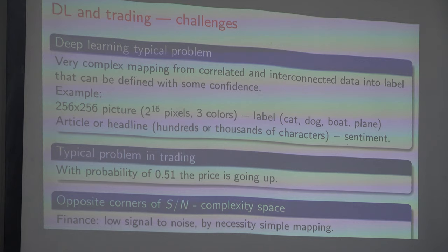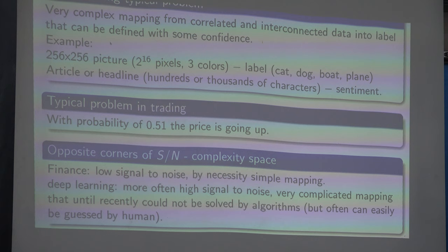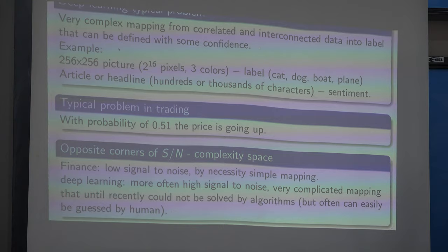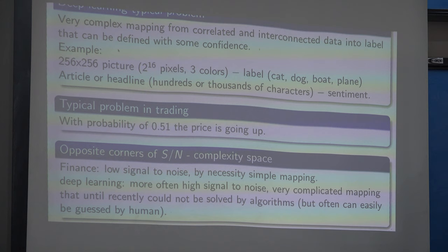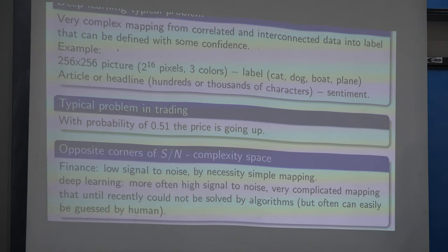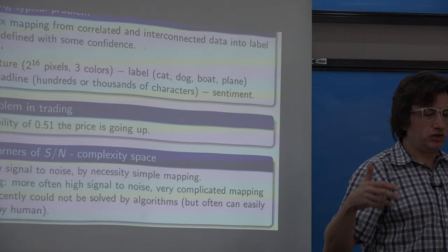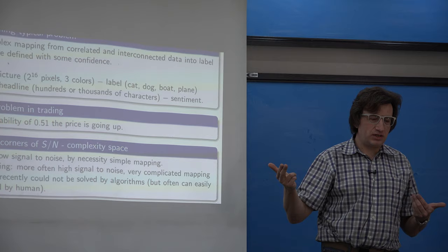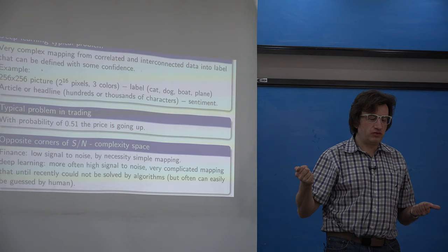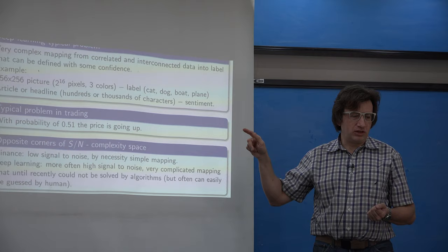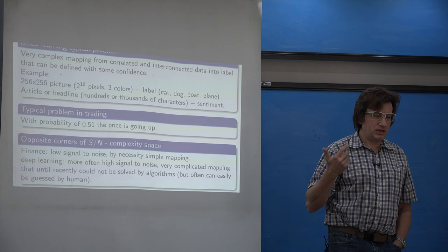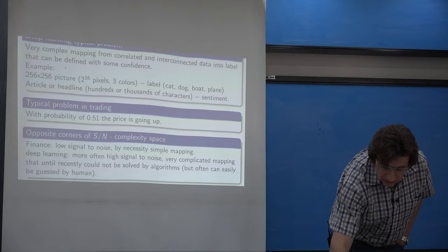Why is this problem different? Neural networks usually have a lot of parameters — a simple one can have millions of weights. When we show it millions of pictures, there's enough information to set those weights. When we solve problems in trading, especially longer-term trading, we have a smaller number of returns to use, and each supplies a very small amount of information — using Shannon's definition, like minus probability log of P. We just don't have enough information to set a correspondingly large number of weights.